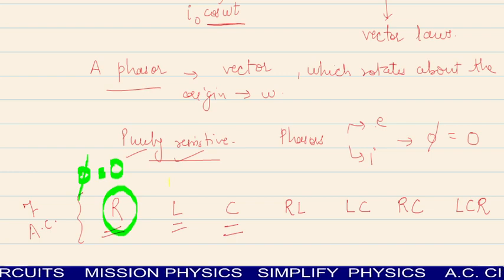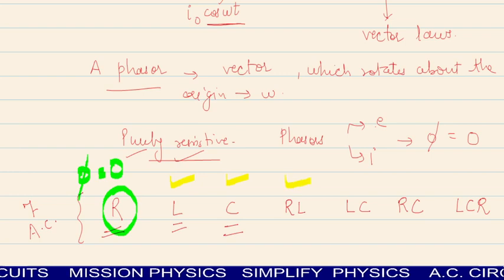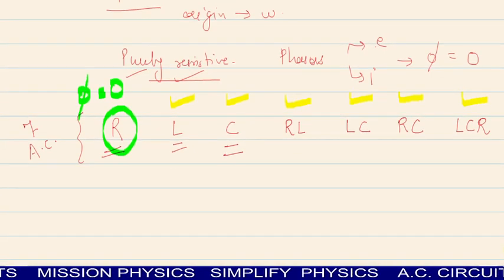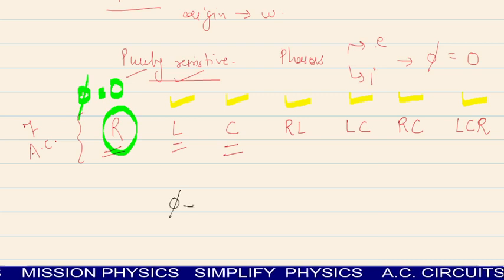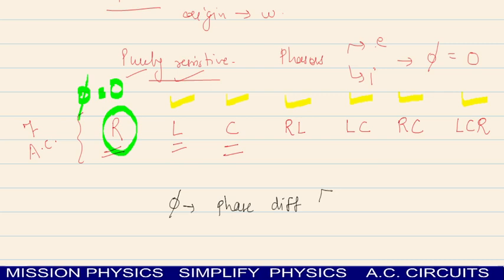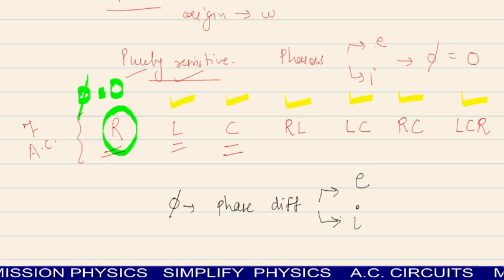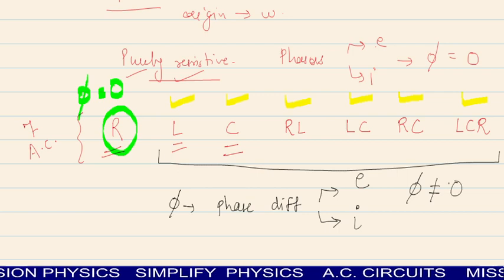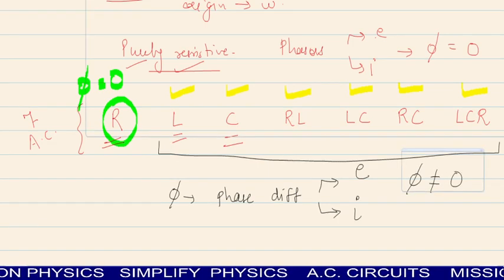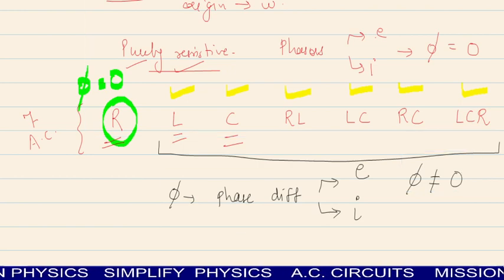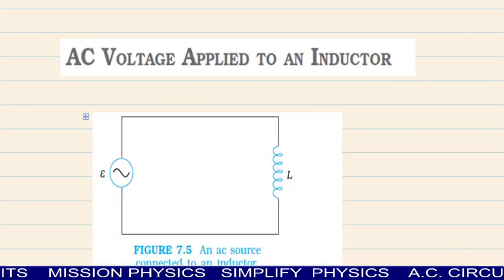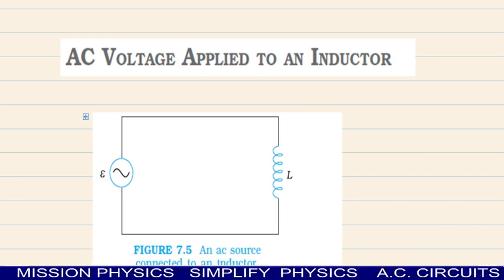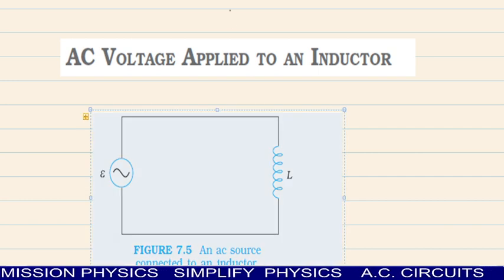For other components like inductive circuit, capacitive circuit, RL circuit, LC circuit, RC circuit, and LCR circuit, phi is not going to be zero. Phi is the phase difference between instantaneous EMF and instantaneous current — this is not going to be zero for the remaining six circuits. So we will be finding the phase relationship for different AC circuits. In the previous lecture we studied the purely resistive circuit; now in this lecture we are going to study the second type — the purely inductive circuit.